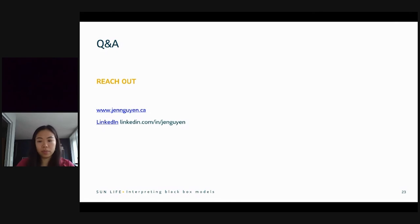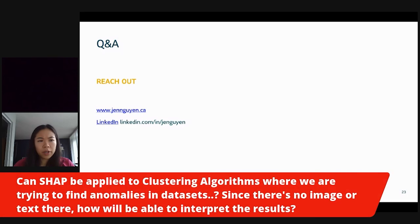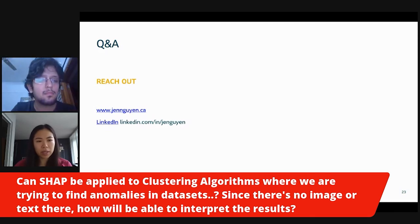And the second question is, can this be applied to NLP models built using deep learning? I suppose, I mean, I think it's somewhat relevant to what you just answered. Yep, it can be applied to deep learning models as well. And the next question is, can SHAP be applied to clustering algorithms where we're trying to find anomalies in data sets? Since there's no image or text there, how will we be able to interpret the results? Yeah, for, I haven't tried applying SHAP to unsupervised models. So that I'm not sure of.